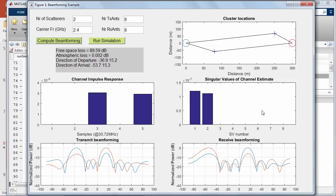You can also observe that out of the eight possible singular values, only two are non-zero, one per scatterer.